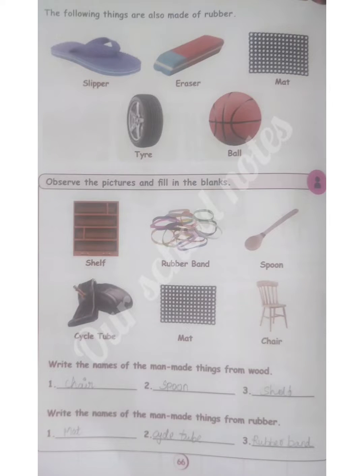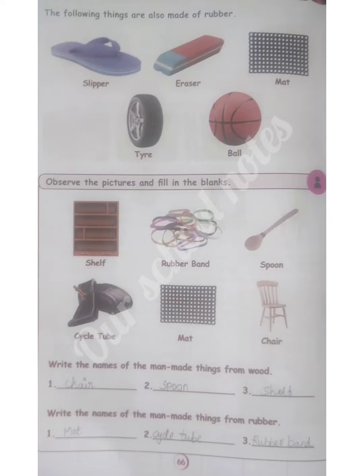Write the names of the man-made things from Rubber. First one is Mat, second one is Cycle Tube, third one is Rubber Band.